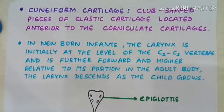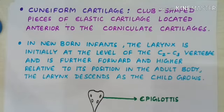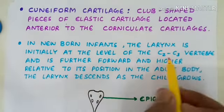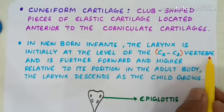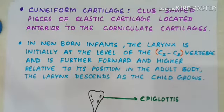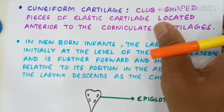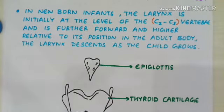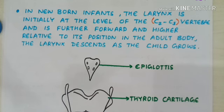In the adult, the larynx is present at the level of cervical C3 up to C7. In newborn infants, the larynx is initially at the level of C2 to C3, positioned further forward and higher than in the adult. The larynx descends as the child grows.